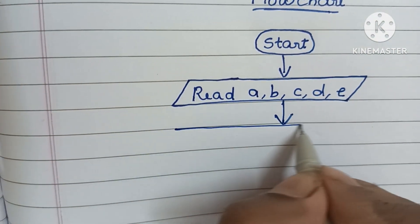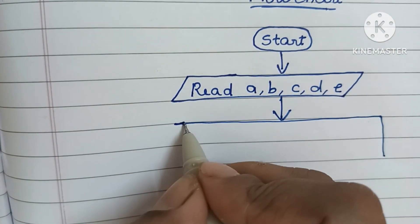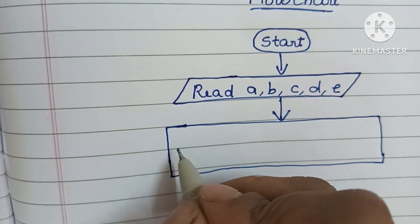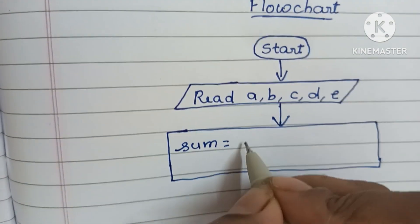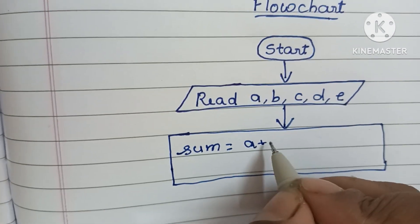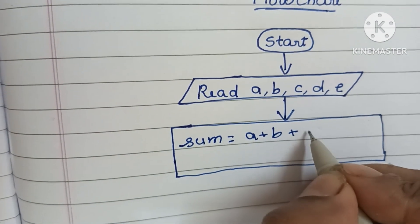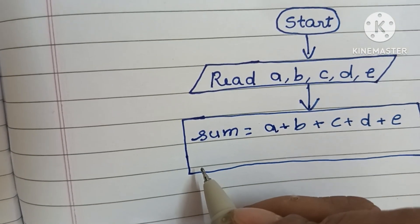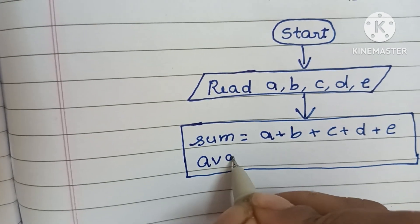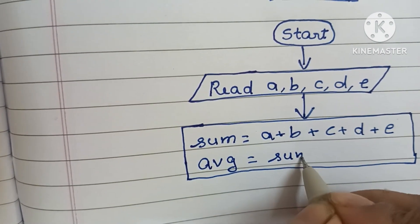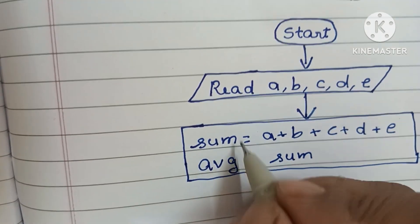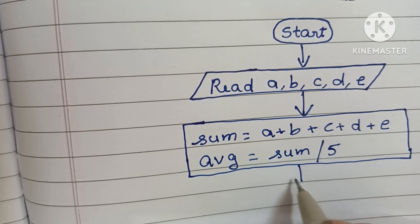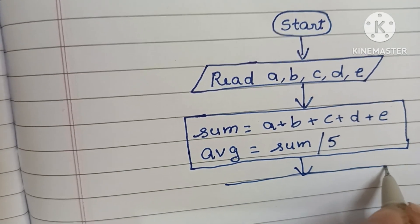Next, we have to calculate sum and average. Calculation is done within a rectangular shape. Within that, we calculate sum using the formula: sum is equal to A plus B plus C plus D plus E. Next, we find average — the average formula is sum divided by five, since the sum of the five numbers is already stored in sum.